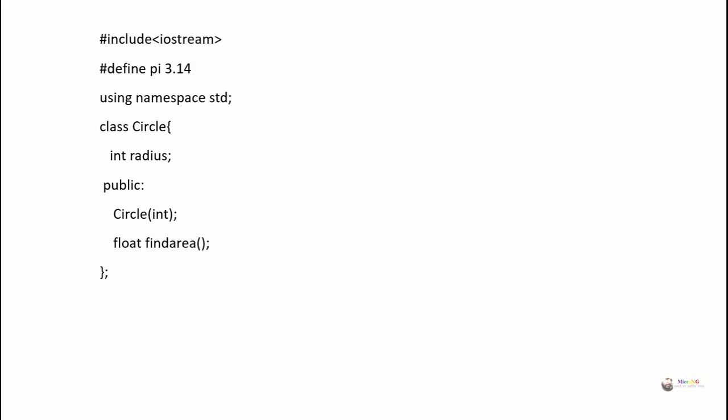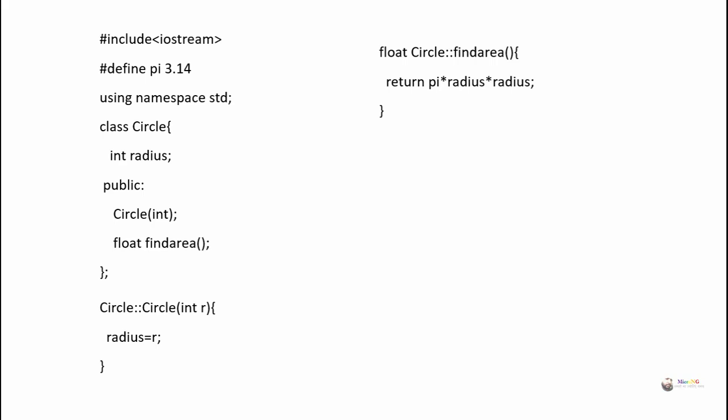Both the constructor and find_area need to be defined outside the class. When defining outside, we first mention the class name followed by the scope resolution operator between the return type and function name. Since a constructor has no return type, we write: Circle::Circle(int r), and initialize radius with r. For find_area, we write: float Circle::find_area() — no parameters — and define it as: return pi * radius * radius.